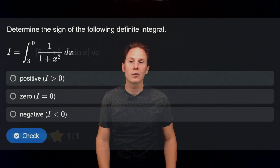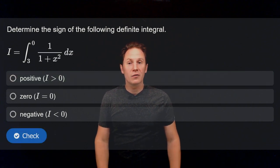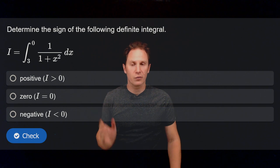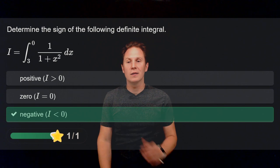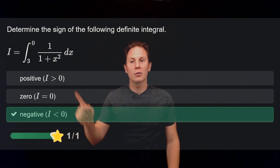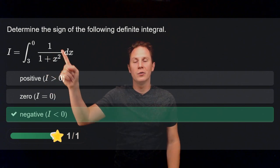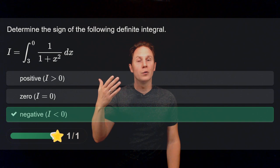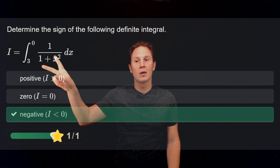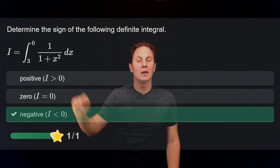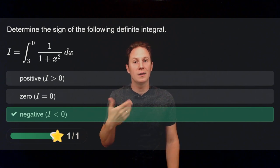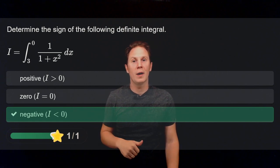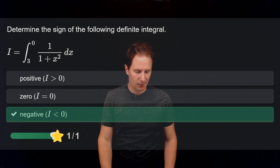Determine the sign of this definite integral. The answer is negative. Even though the function is taking on positive values over the interval from 0 to 3, we are flipping the endpoints of the interval and integrating from 3 to 0, which introduces an overall minus sign — that's why the integral is negative.